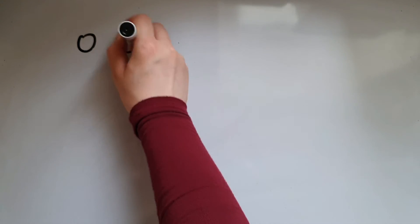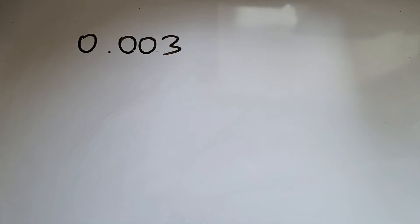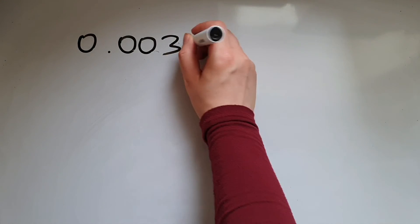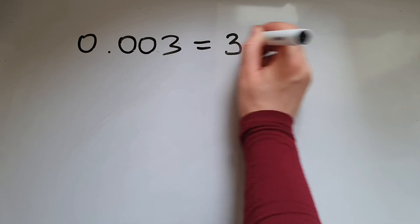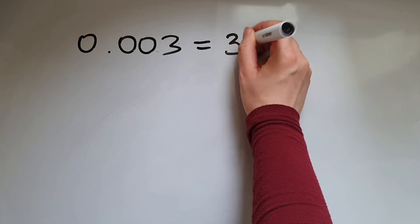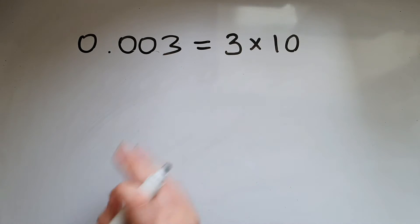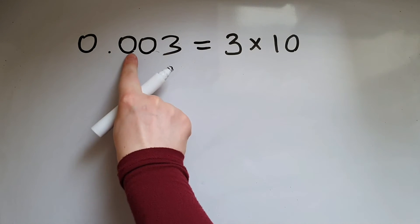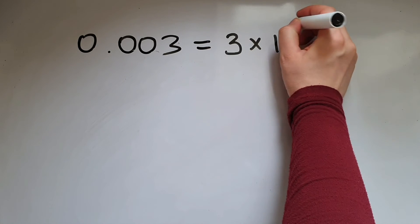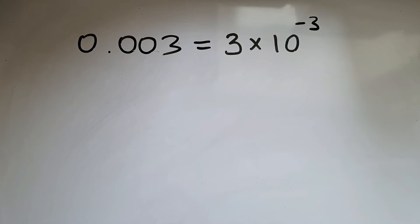We use standard form when working with very small numbers as well. So if we have 0.003, that is the same as saying 3 times 10 to the power of negative 3 — it goes completely in the negative direction.